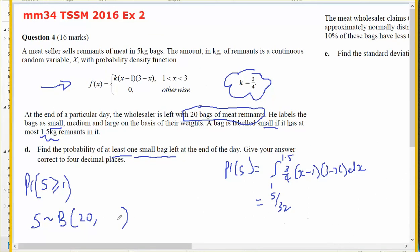So the probability of small is 5 on 32. Now I want this binomial and that's going to be interactive, distribution, binomial continuous.